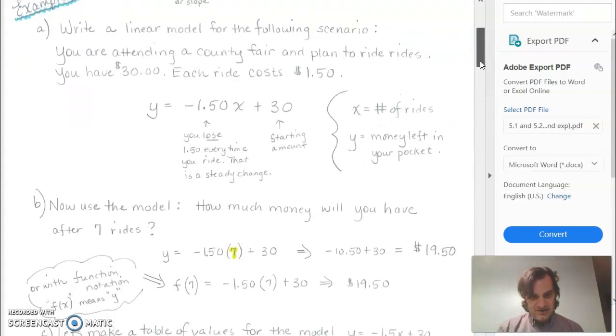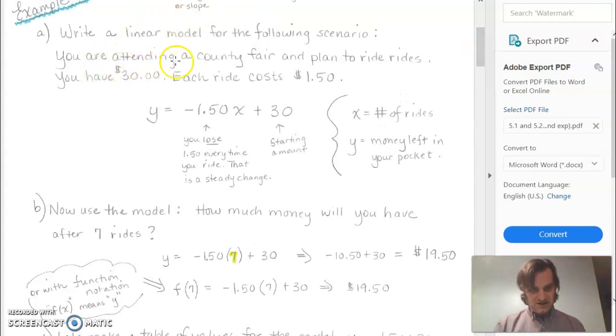So very quickly, here's an example. We're trying to write a linear equation. It says you're attending a county fair and plan to ride rides. You have $30, and each ride costs $1.50. So we're going to write an equation that talks about how much money we have left after we ride so many rides. So the starting amount we had was $30. And then x is the number of rides we ride, and we have a negative $1.50 here because it says we're going to pay $1.50 for each ride that we get on.